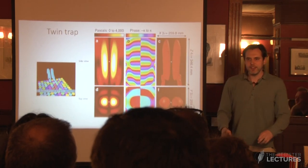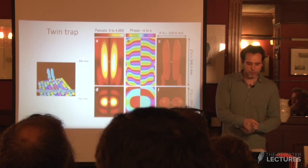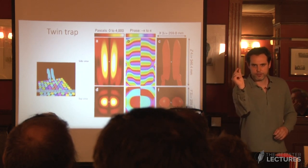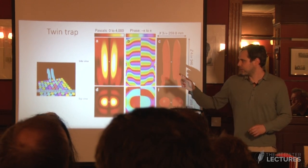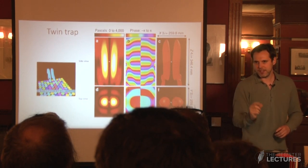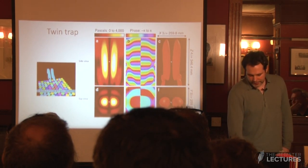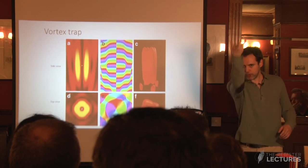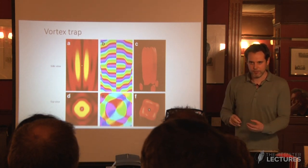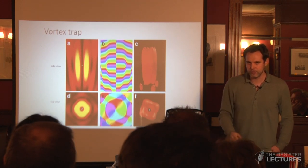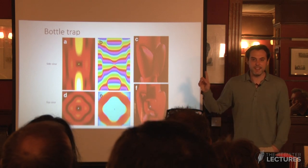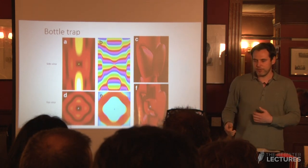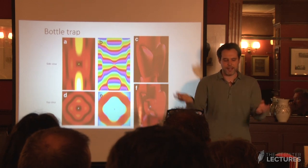There are different types of acoustic traps. The twin trap has two fingers of high intensity with the particle trapped in the center. The vortex trap is like a tornado of high intensity with a silent core — a particle placed there gets trapped in the center of the tornado. And the bottle trap is the easiest to understand: it's like a bottle of high intensity surrounding the particle, which sits in the center surrounded by high amplitude on all sides.